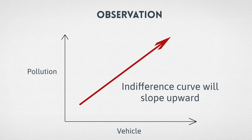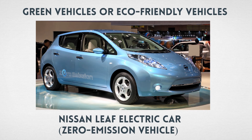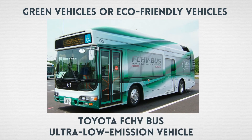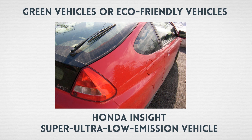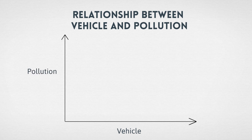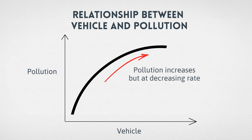The second observation is that nowadays many countries are producing green vehicles or environment-friendly vehicles, such as the Nissan Leaf electric car, which is a zero emission vehicle; the Indian Reva electric car, another ZEV sold in India, several European countries, Japan, Australia and Costa Rica; the Toyota FCHV bus, an ultra low emission vehicle; and the Honda Insight, a super ultra low emission vehicle. These vehicles produce less harmful impacts to the environment. It may therefore be considered that as the number of vehicles increases, pollution increases but at a decreasing rate, thus giving rise to an indifference curve that is concave.